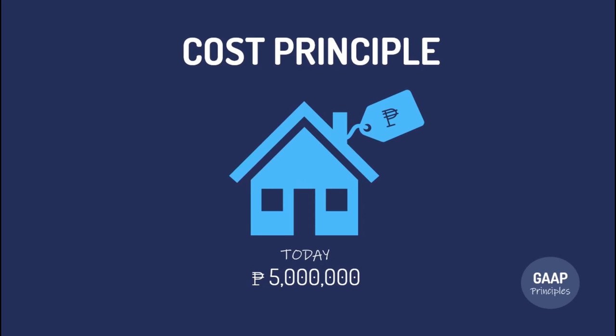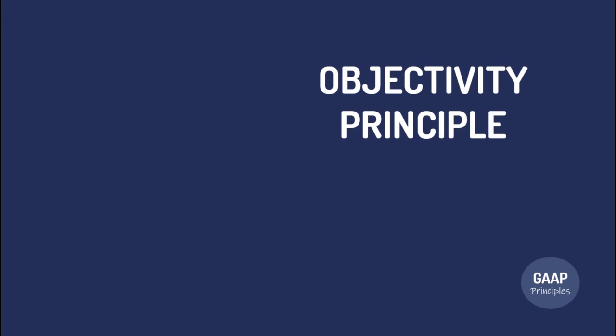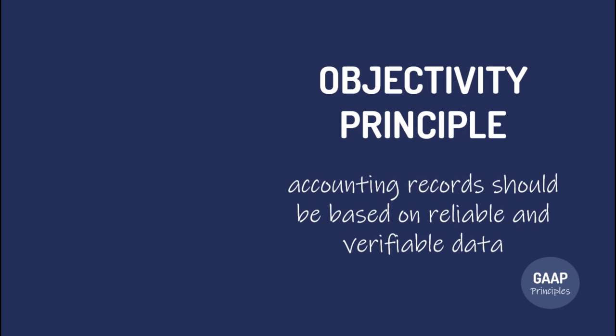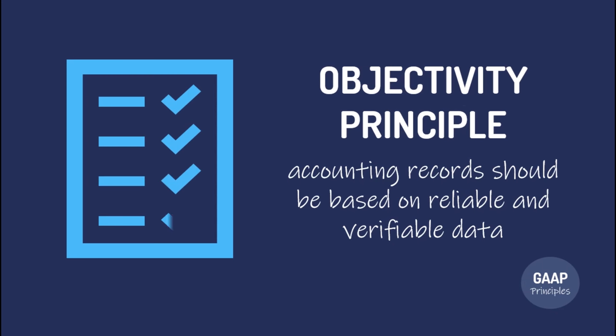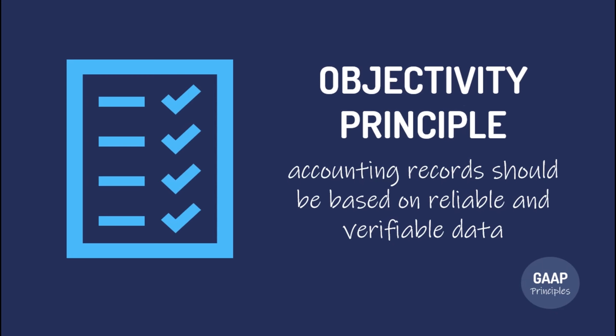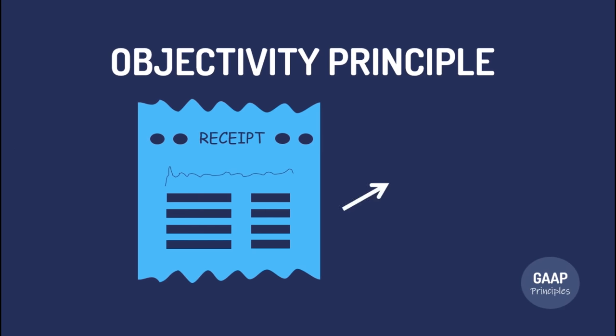Second, the Objectivity Principle. This simply requires that accounting records should be based on reliable and verifiable data as evidence of transactions. To attain reliability and verifiability, every transaction needs to be supported with evidence. For example, purchases should be evidenced by official receipt.